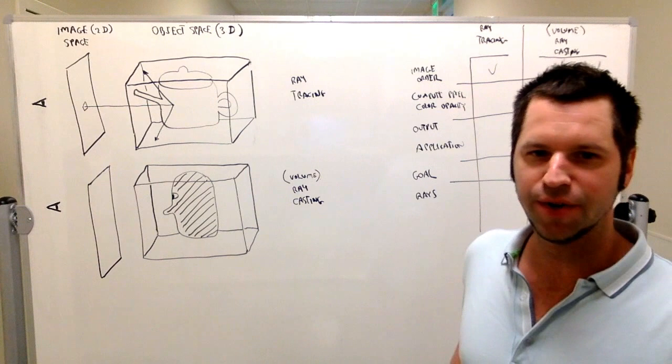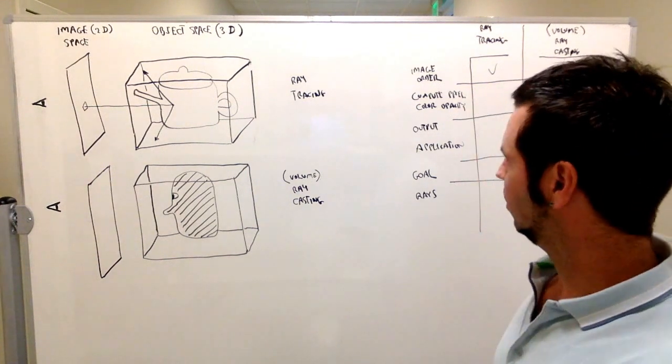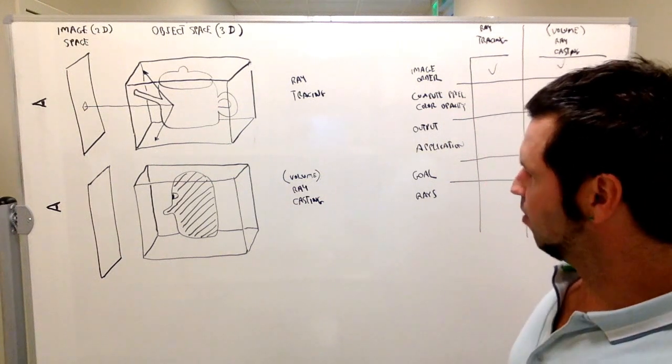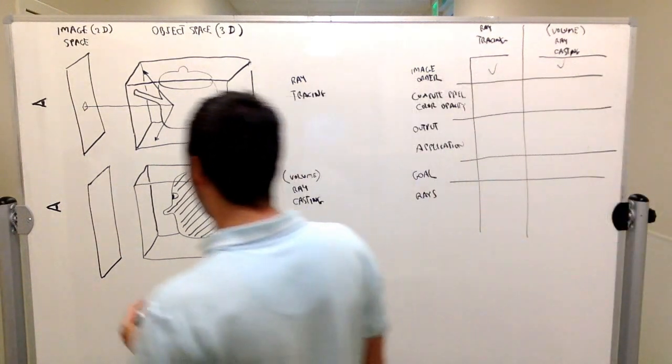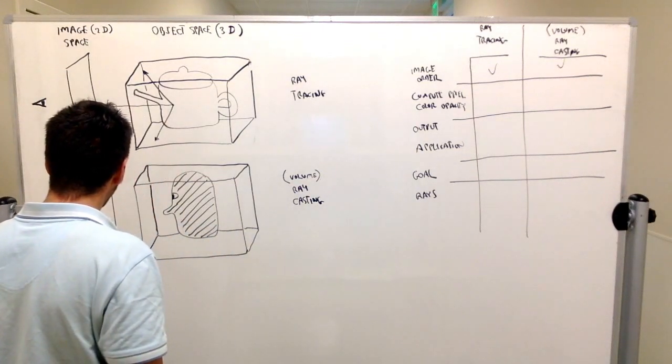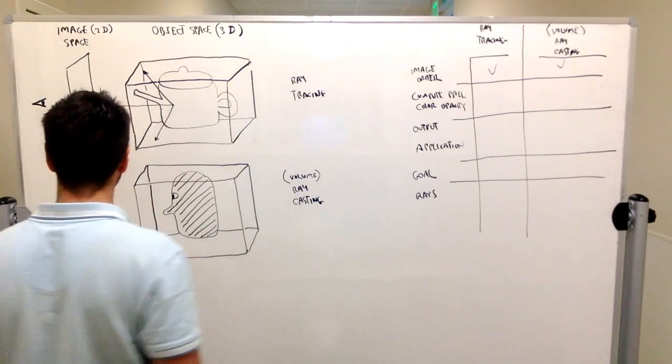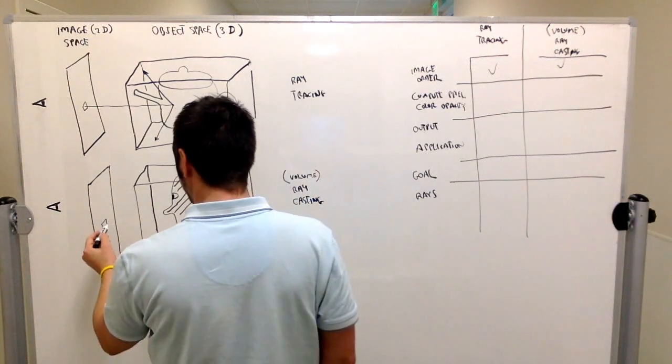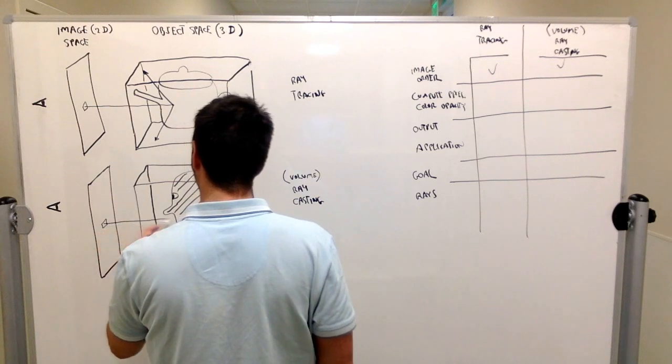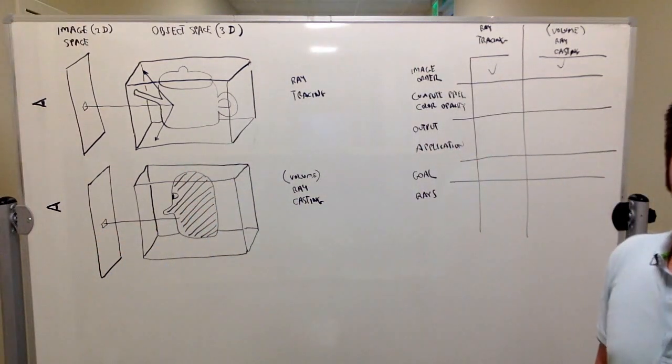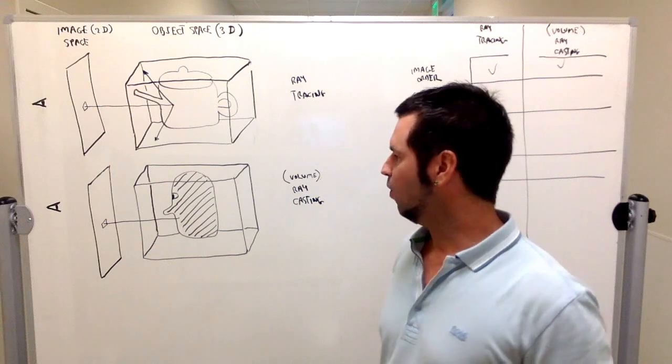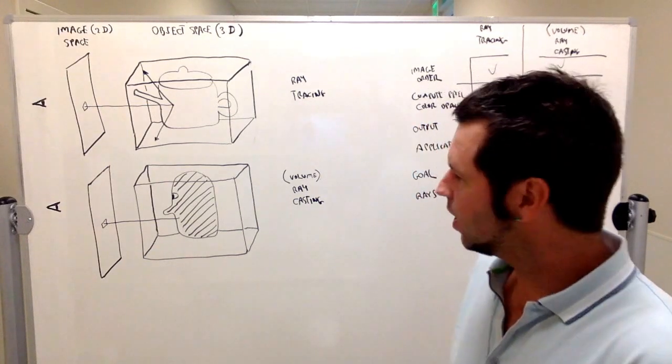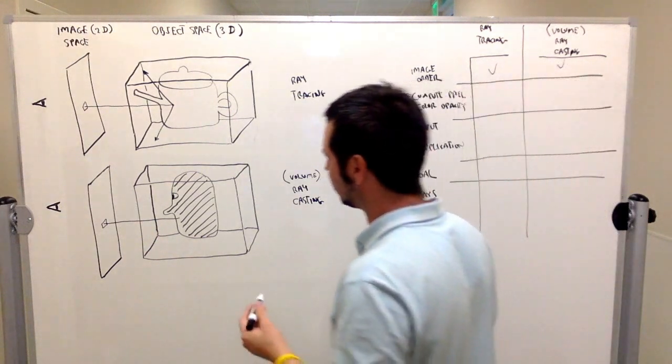In ray casting—also called volume ray casting—it's a similar but not the same operation. For each pixel, we cast a ray into the volume. But when we hit the surface, we don't stop the ray. We don't reflect the ray or change its direction. The ray keeps going.